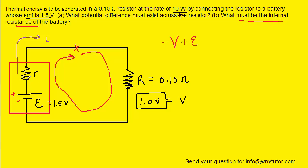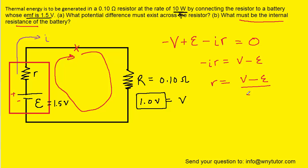We then encounter the internal resistor, and again we're moving with the current, so we have a negative potential change equal to the current I multiplied by the internal resistance r. When we return to where we started, we set that total potential change equal to zero. We then rearrange the equation to isolate the internal resistance r: adding V to the right-hand side and subtracting the EMF gives us negative IR equals V minus the EMF. Dividing both sides by negative I gives us r equals V minus EMF divided by negative I.